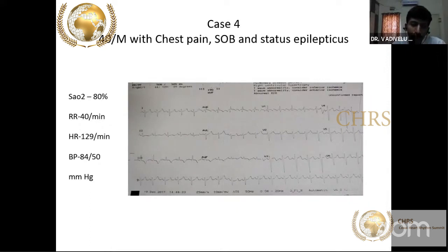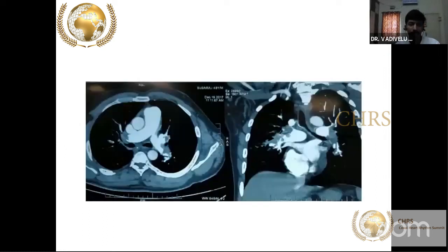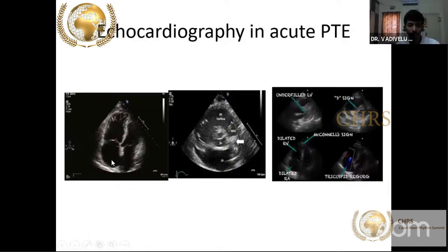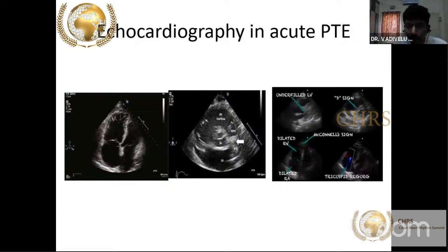CPR was started and thrombolysis given. A quick screening echocardiogram showed dilated RA and RV. After thrombolysis, the patient recovered and is now at two-year follow-up. All emergency physicians should know basic echocardiography to look for LV function. If you have sinus tachycardia, desaturation, hypoxemia, hypotension with dilated RA and RV, suspect pulmonary embolism regardless of setting or whether DVT is present.